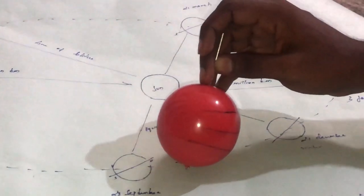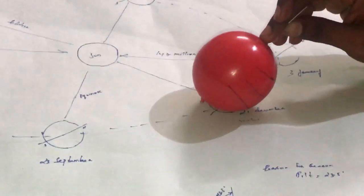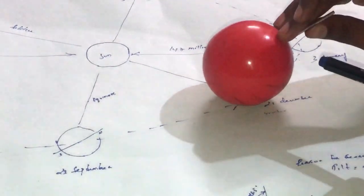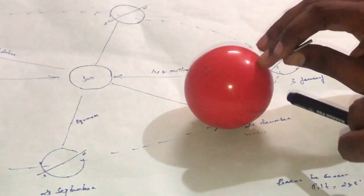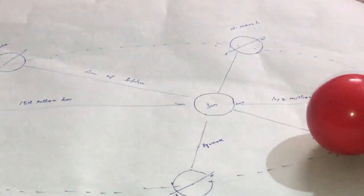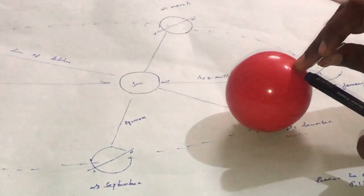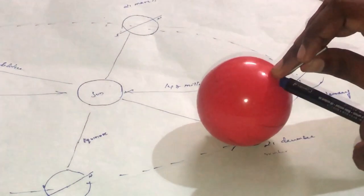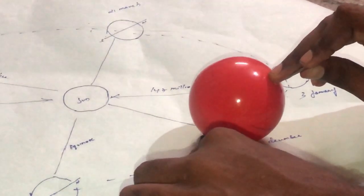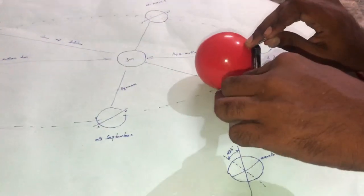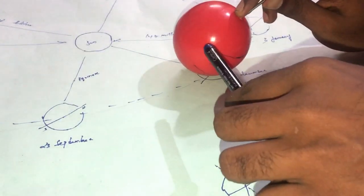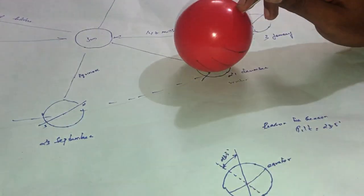Next is the winter solstice. In the north, there are 24 hours of darkness, whereas for the south pole there are 24 hours of daytime. So in the north it is winter, and for the south it is summer. Likewise, on 21st of June, the north is in summer and the south is in winter.